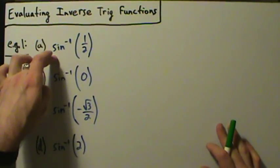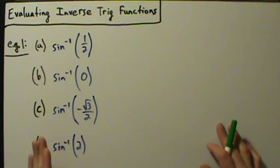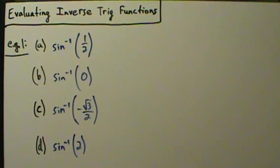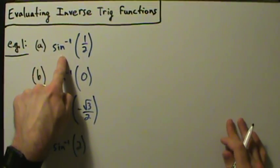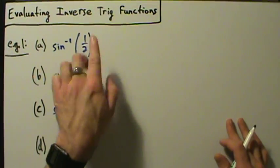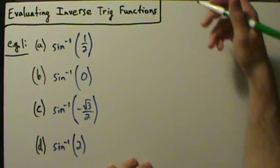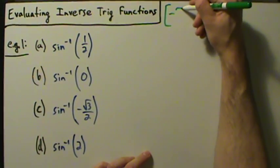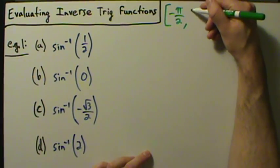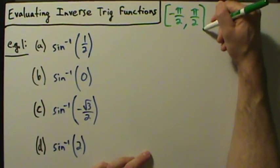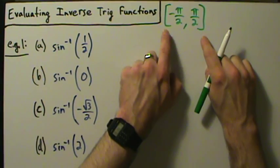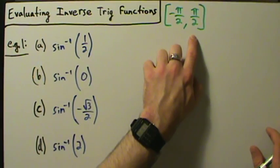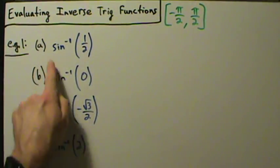First, we're dealing with the inverse sine function in this video. When we answer these questions we have to think about what the range of the inverse sine function is. When we do the inverse sine of one half we're going to get some number, and that number has to be in the range of the inverse sine function. Remember the range is the interval from negative pi over 2 to positive pi over 2, with square brackets because it includes the endpoints. Negative pi over 2 and positive pi over 2 are possible values of the inverse sine function.